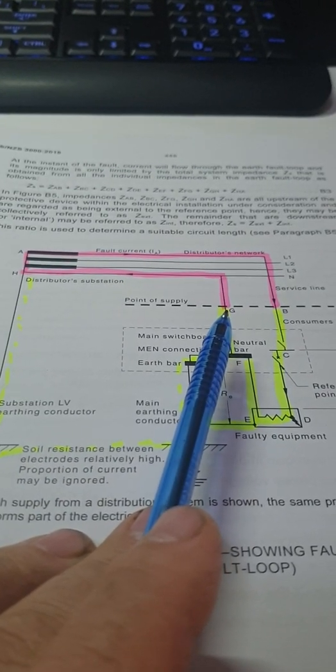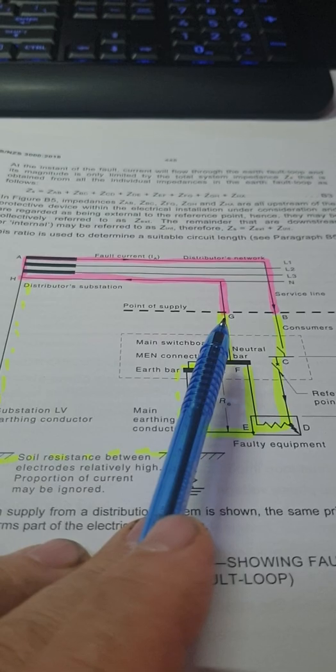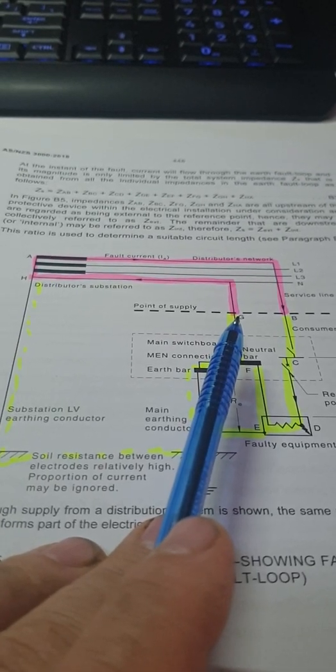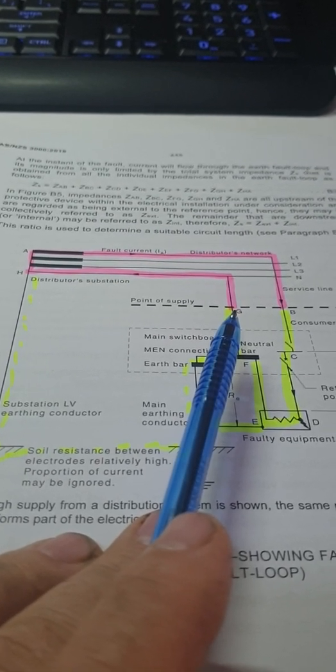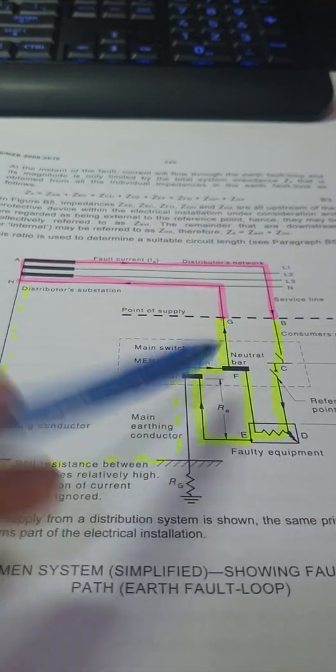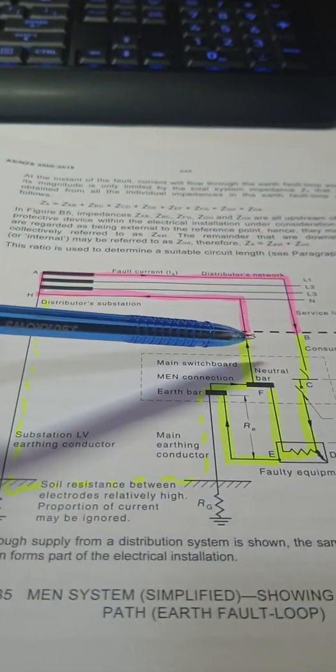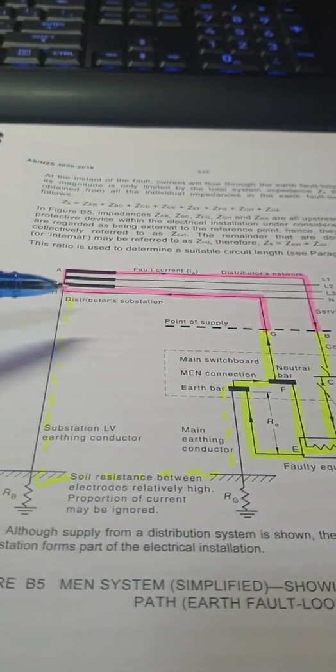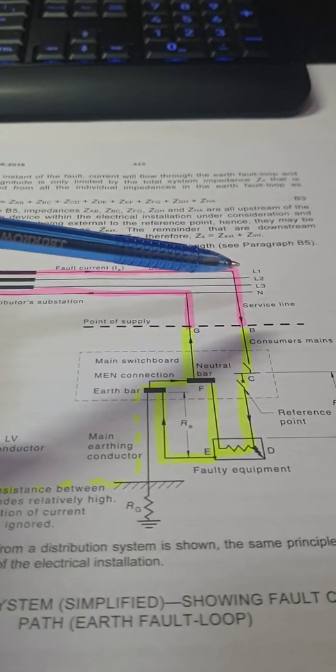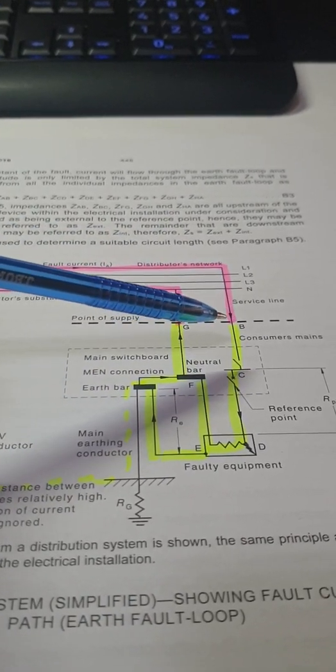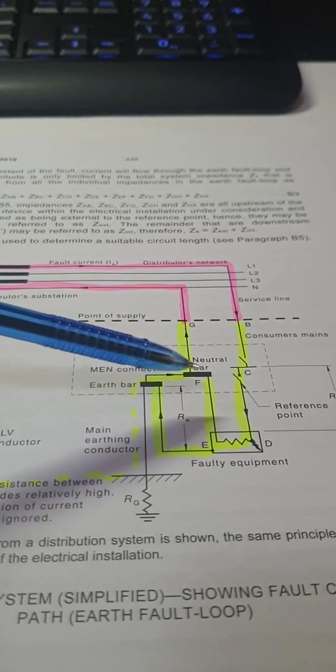G'day, this short video is going to talk about the calculation of fault loop impedance. On this diagram here, I'm showing you what we're talking about. In fault loop impedance we have what we call the external loop that runs back via the neutral, back via the active, and comes back into our point of attachment.